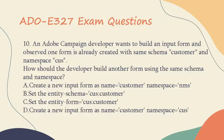a. Create a new input form as name equals customer, namespace equals nms. b. Set the entity schema equals cus, customer. c. Set the entity form equals cus, customer. d. Create a new input form as name equals customer, namespace equals cus.